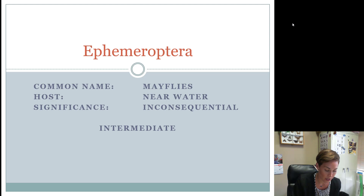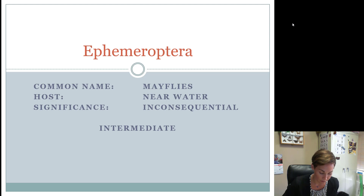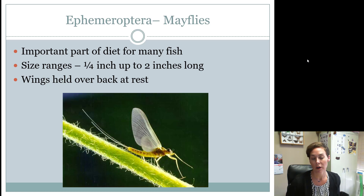The second order — for intermediates and seniors — is Ephemeroptera, which are all the mayflies. 'Ephemeral' means short-lived, and mayflies don't live very long once they emerge as adults; they might live only hours or a day. Their job is to find a mate, lay eggs, and continue the life cycle. They're considered inconsequential overall, though they can be a nuisance when they emerge in mass. You'd always find them near water because their nymphs are aquatic, making them an important food source for fish.